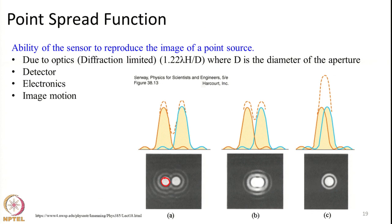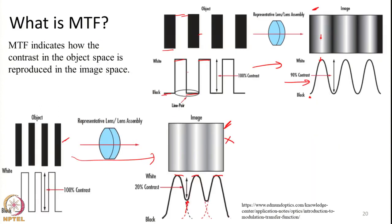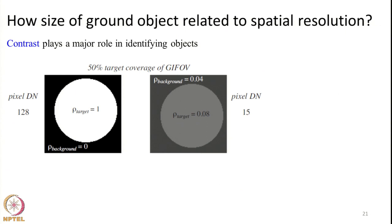We saw what the point spread function is — I gave a basic explanation. Similarly, what the MTF is — again a basic explanation was given. Today we are going to continue with further details about how objects smaller than a pixel size can be detected.